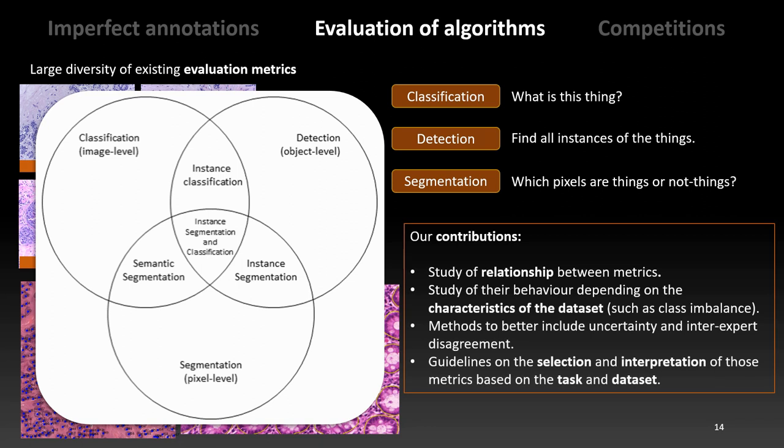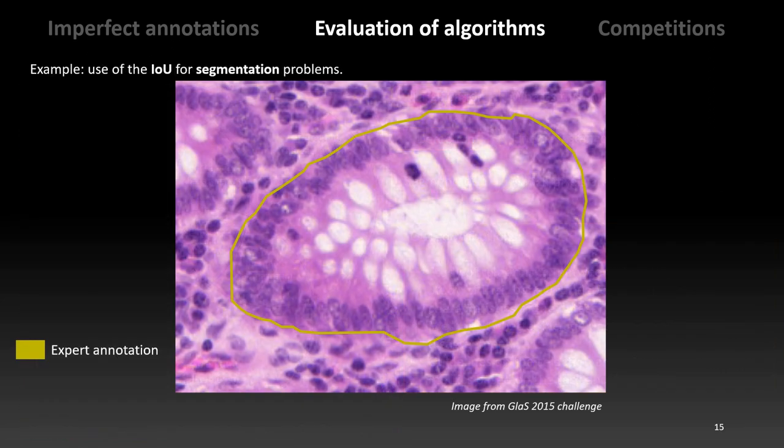In the thesis, we studied the relationship between the different metrics, which ones tend to behave in the same way and which ones can sometimes give very different results. We also studied their behavior depending on the characteristics of the data, such as the class imbalance that we showed in our cat and dog example, and how to better include the uncertainty and the differences of opinions between experts. For this, we try to provide some guidelines on the selection and interpretation of those metrics. And I want to show just a few examples of the analysis that we made.